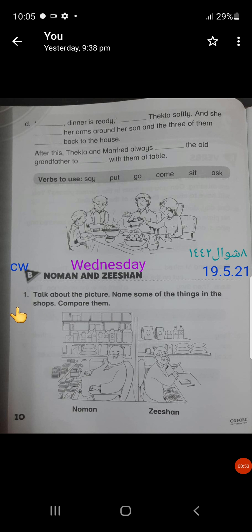So what is exercise B1? Talk about the picture. They have given you a picture over here. Name some of the things in the shops. There are two different shops. One is of Naman and the other is of Zishan. Compare them. As you know that yesterday we compared things and yesterday we were doing similes and we were comparing two entirely different things with regard to the similarities or resemblance between them.